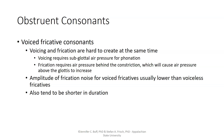The combination of voicing and frication is hard to create at the same time. In order to have voicing, there needs to be subglottal air pressure to make phonation happen. Frication also requires an air pressure buildup behind the constriction. That buildup causes air pressure above the glottis to increase, making it difficult for subglottal pressure to exceed it. As a result, the amplitude of frication noise in voiced fricatives is usually lower than in comparable voiceless fricatives, and voiced fricatives also tend to be shorter in duration.